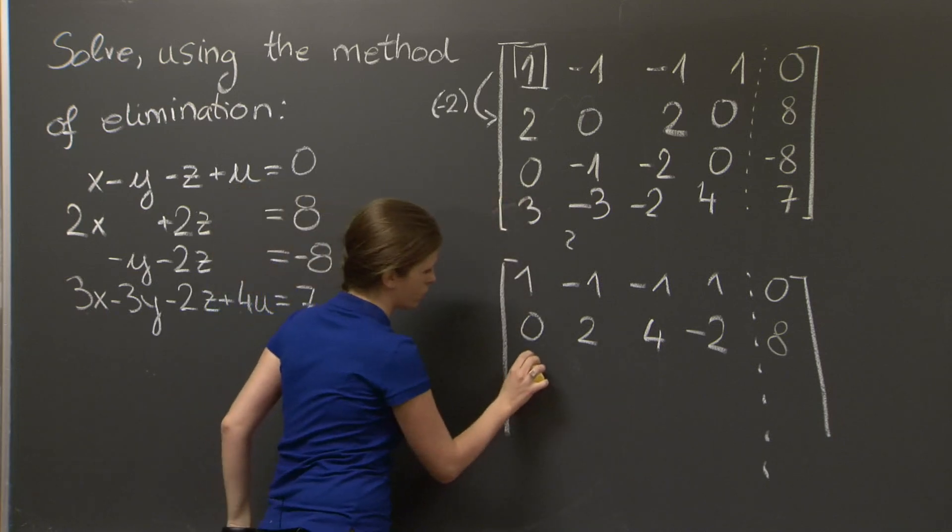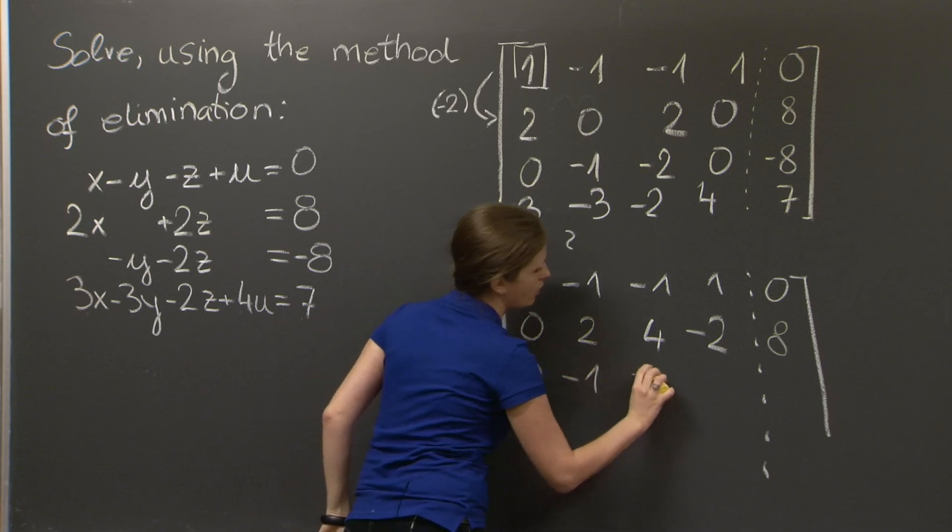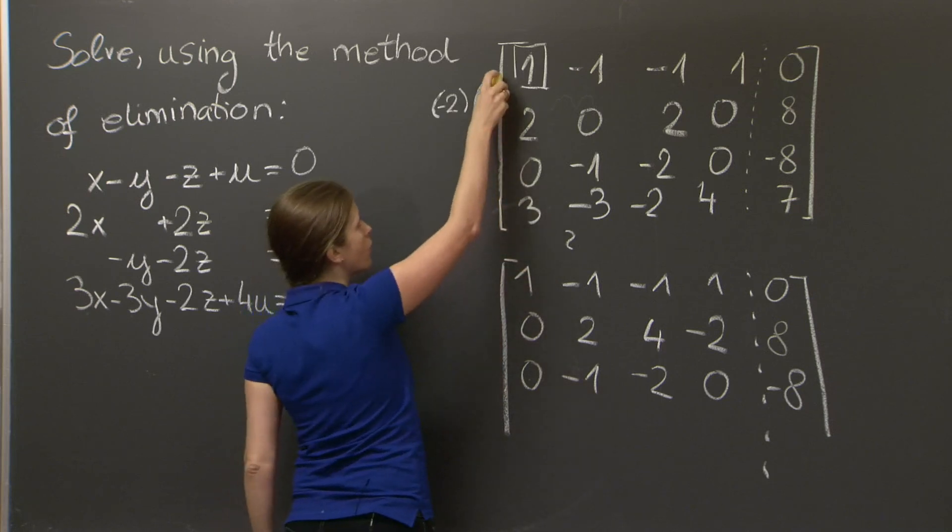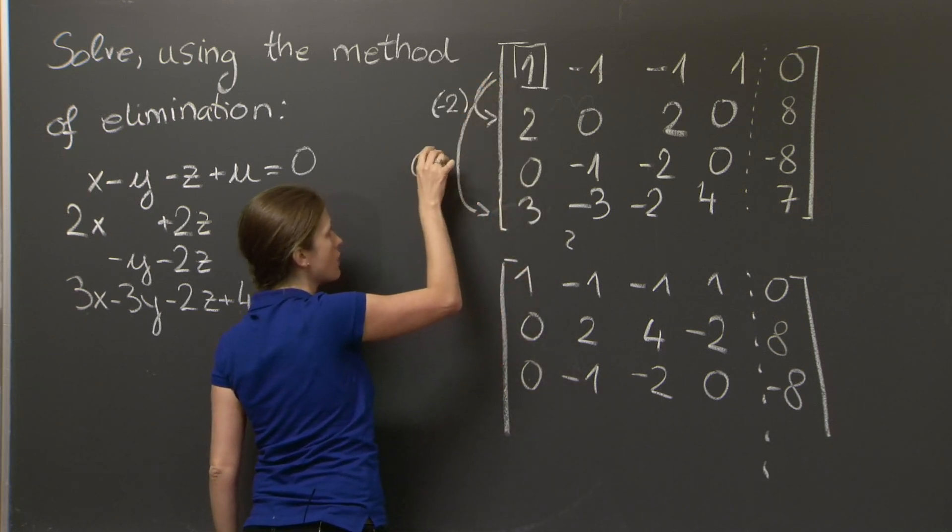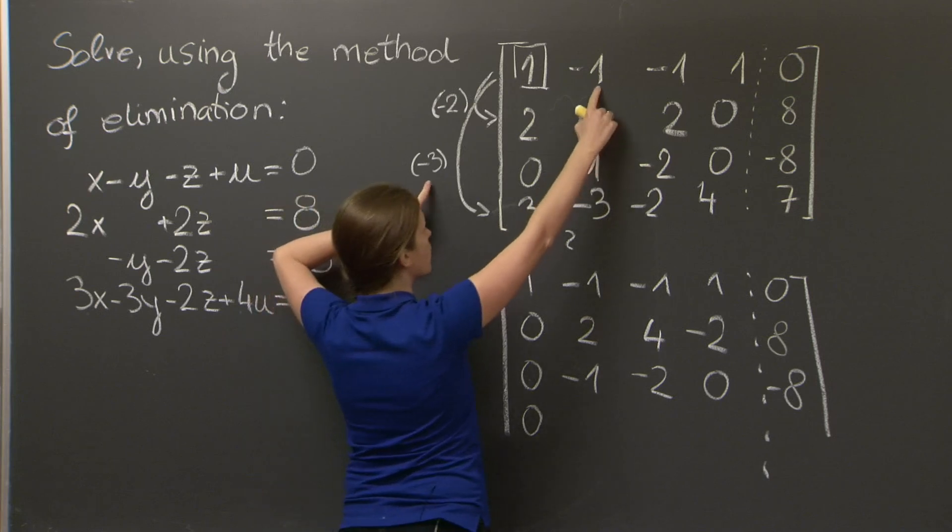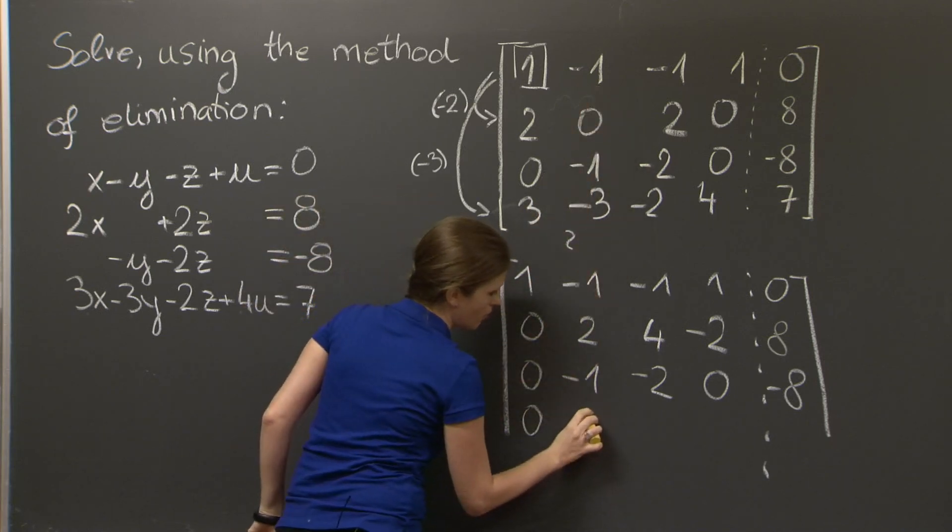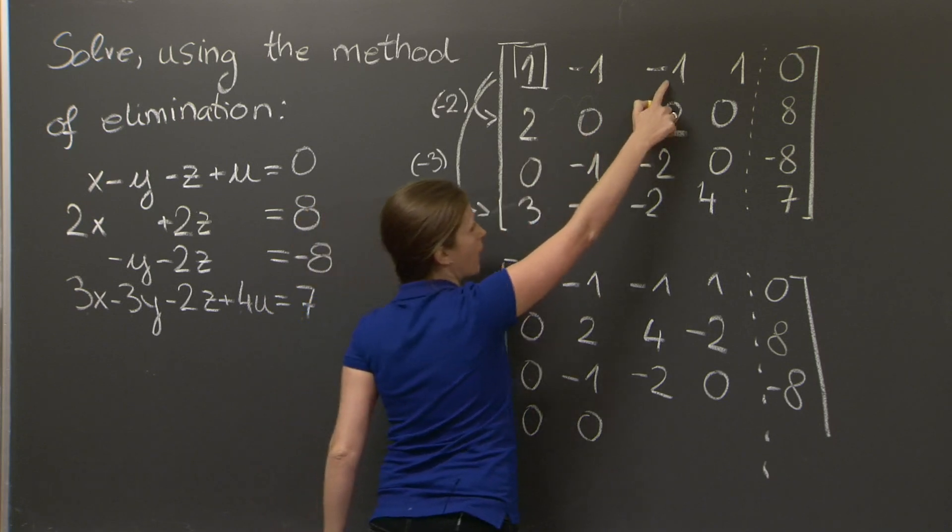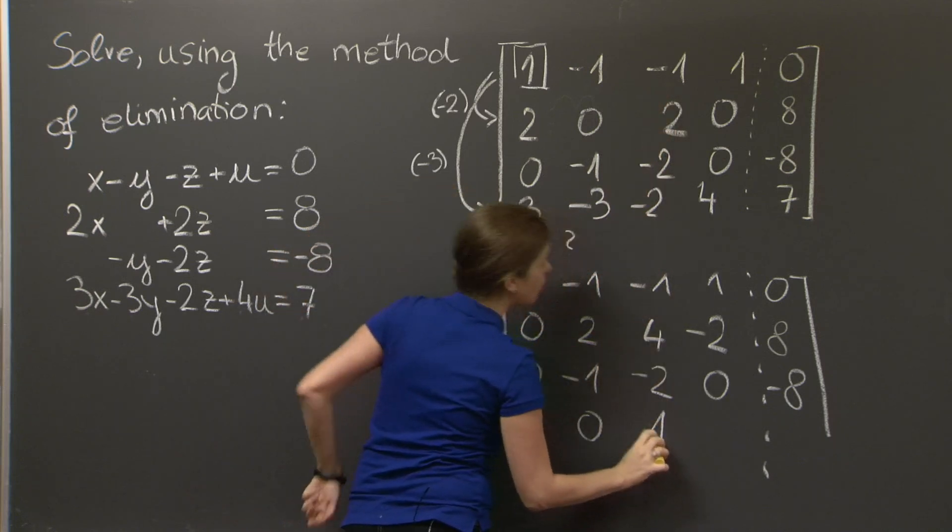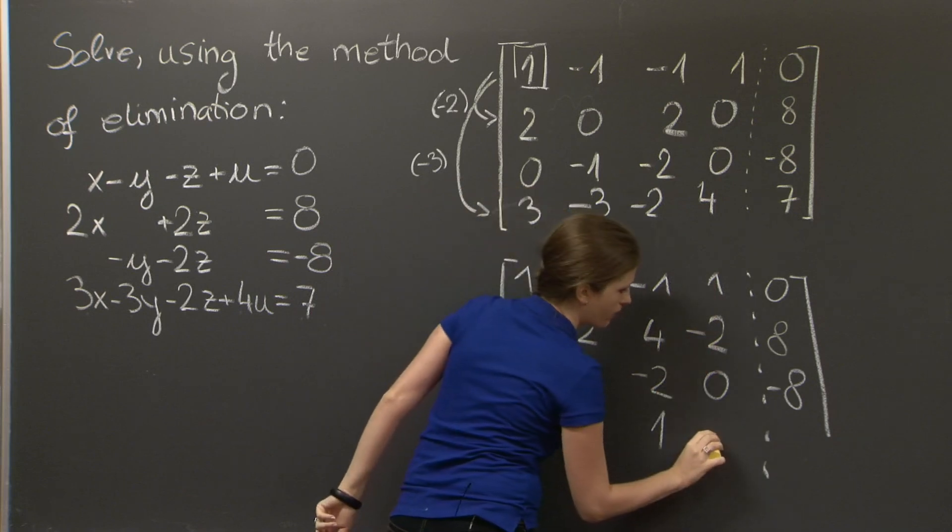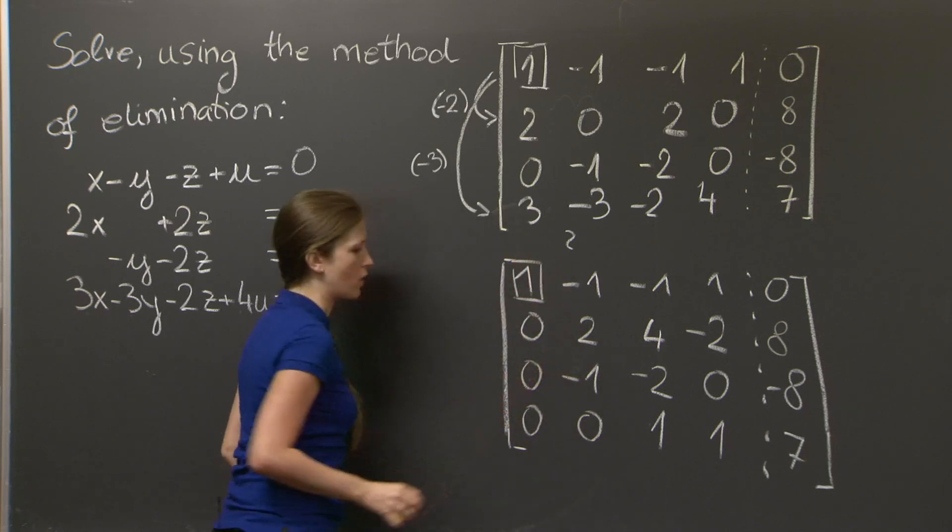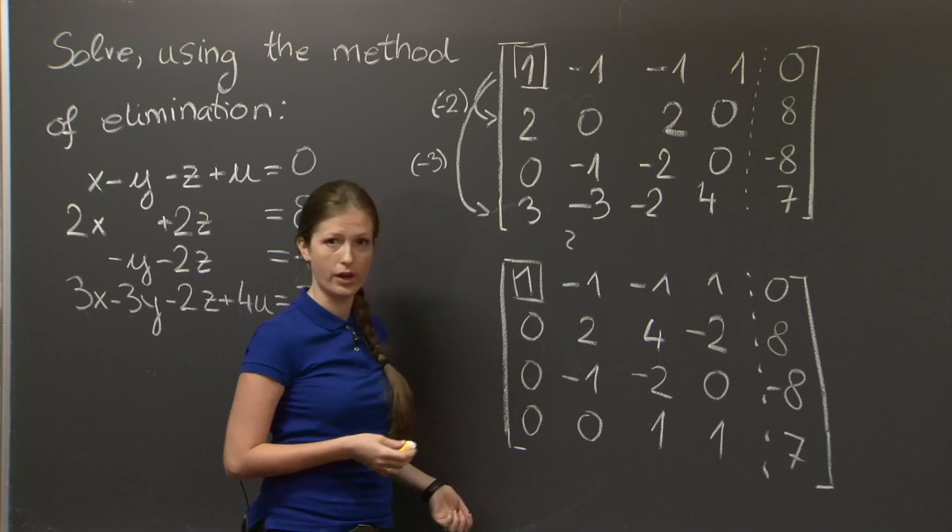The third row already has a 0 here, so I can just copy it over: 0, minus 1, minus 2, 0, minus 8. And to get a 0 here, I'm going to multiply the first row by minus 3 and add it to the fourth row, and get 0. Minus 3 times minus 1 is 3, minus 3 is 0. 3 minus 2 is 1. And minus 3 plus 4 is 1. And there we go. The first column looks like a first column of an upper triangular matrix.